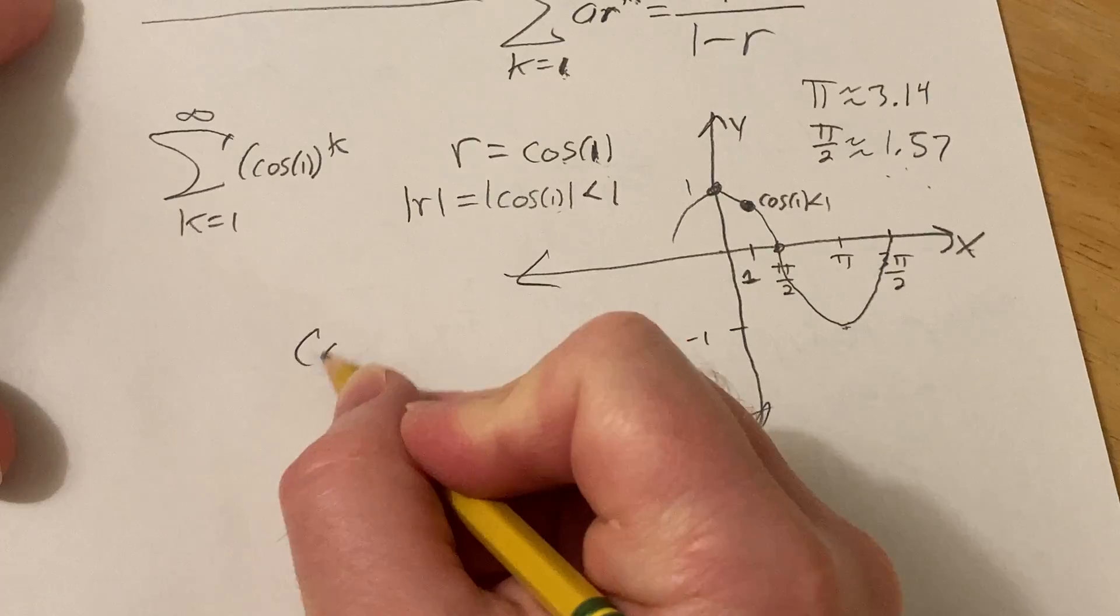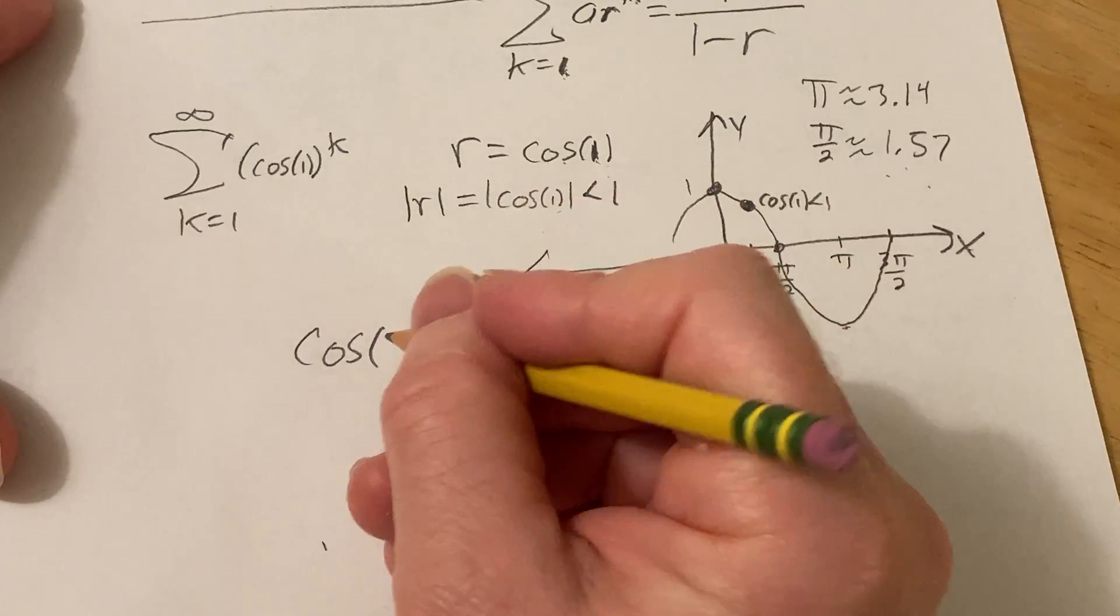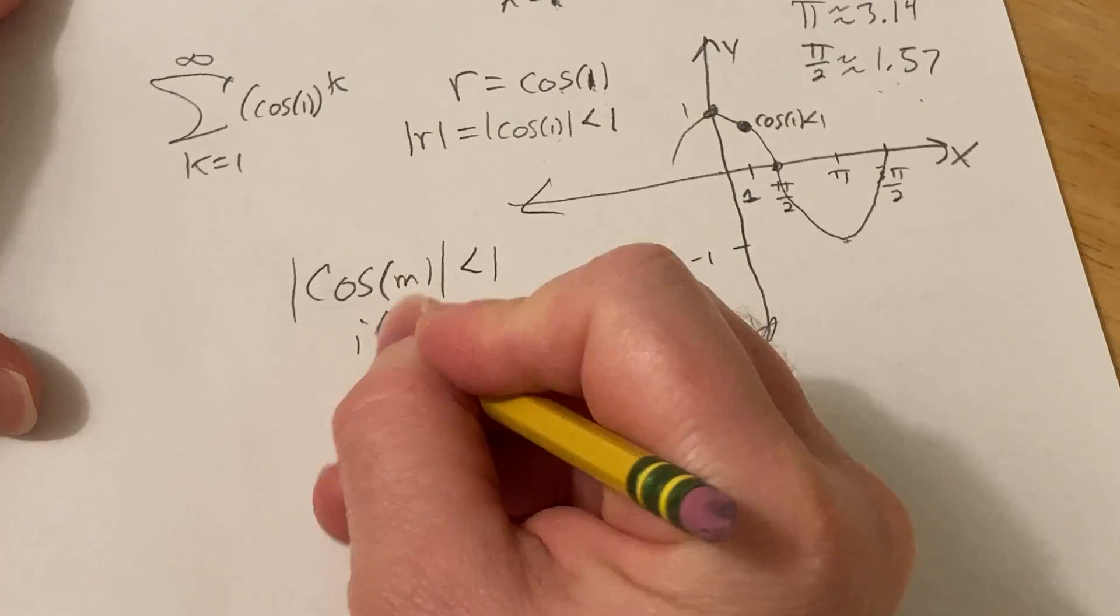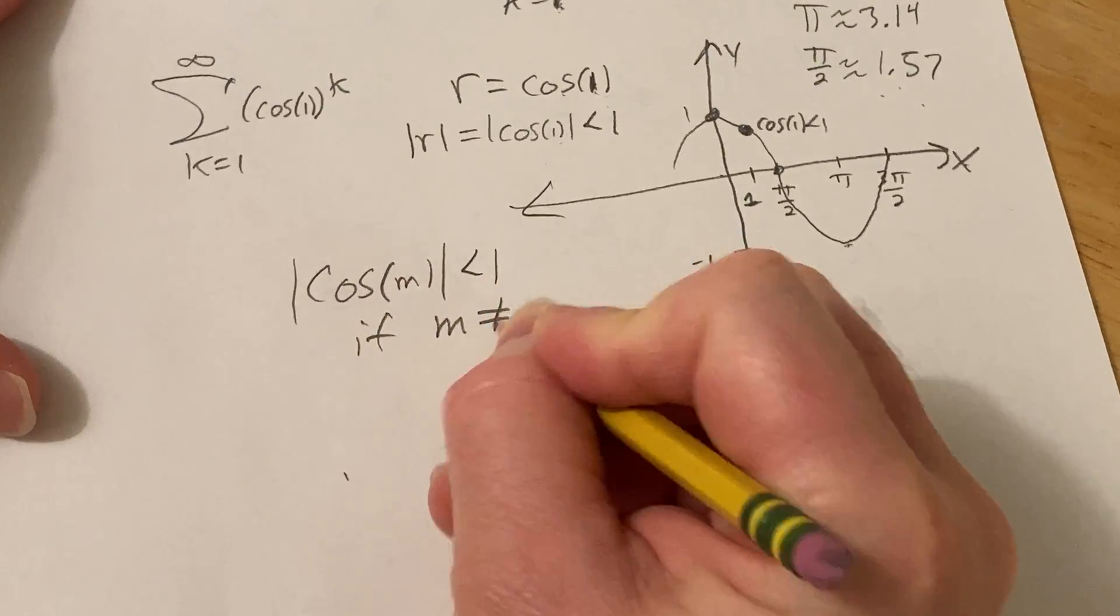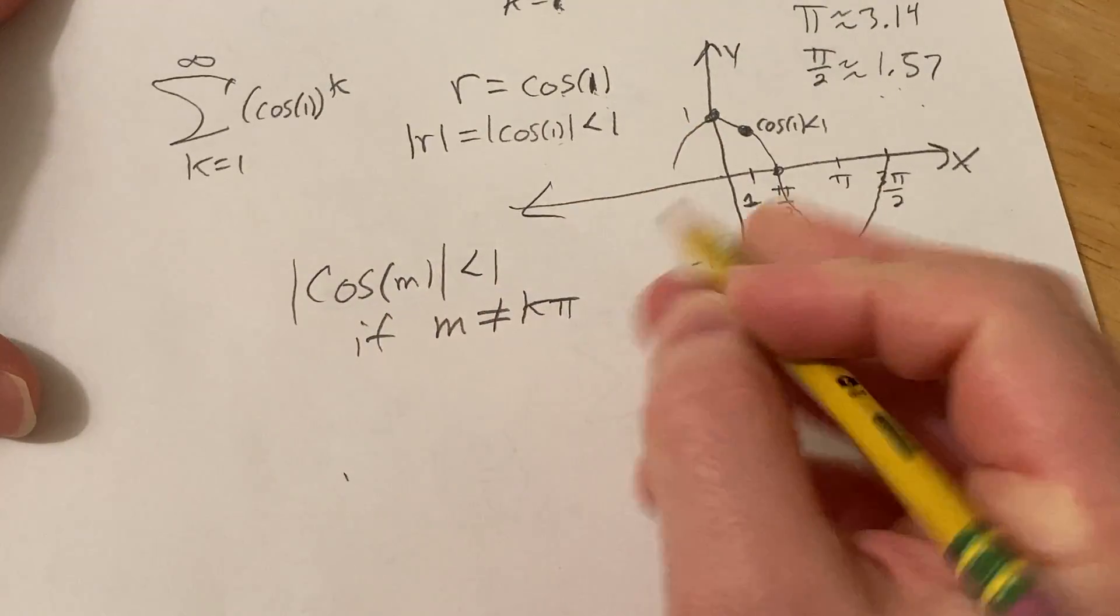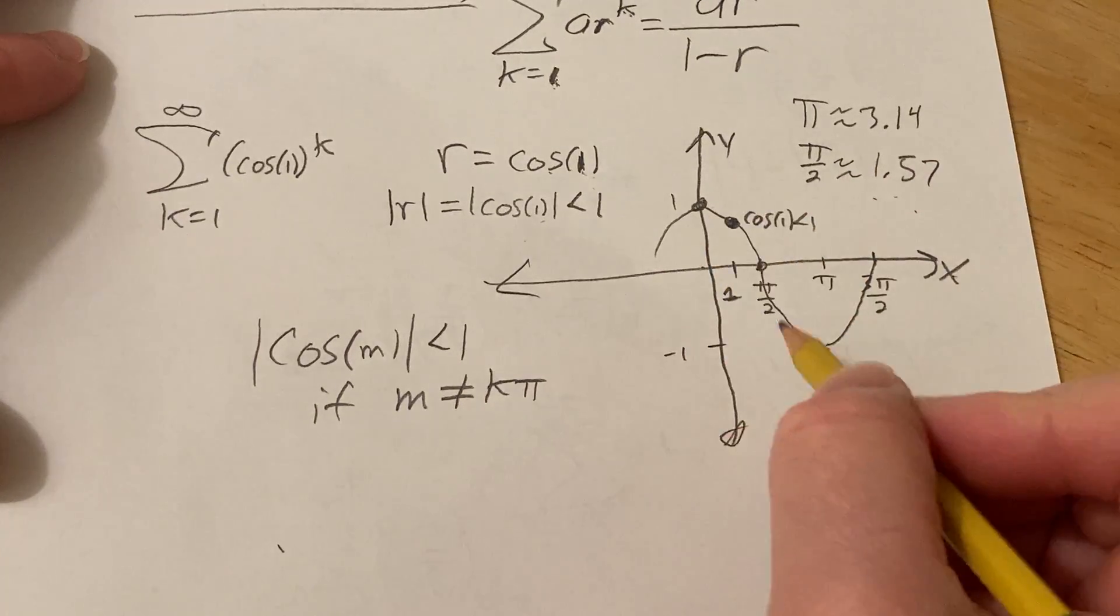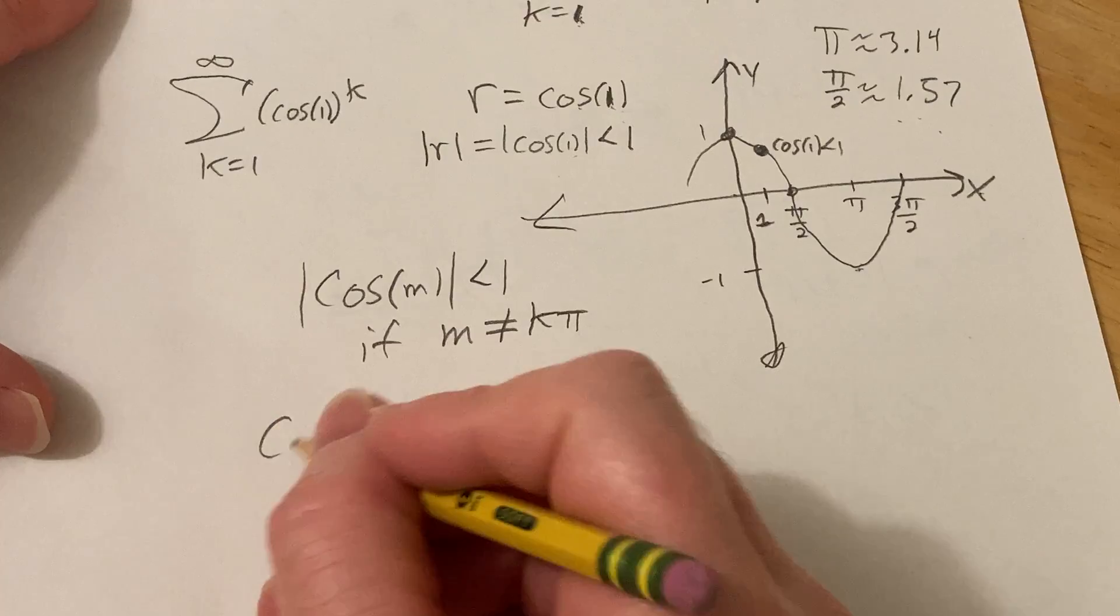So in general, cosine of m is going to be less than 1 if m is not equal to a multiple of pi, where k is an integer, right? So just some extra knowledge there. Because that's the only time it's going to be 1. So this will converge. So this converges.